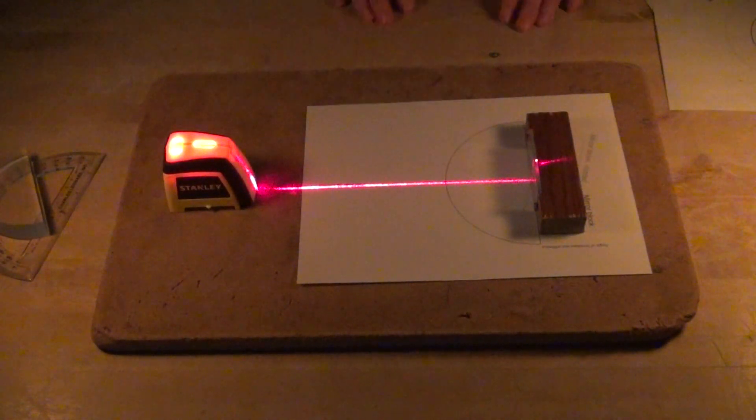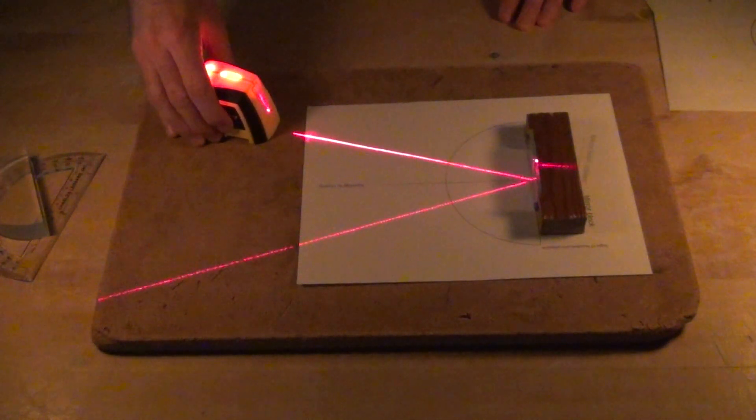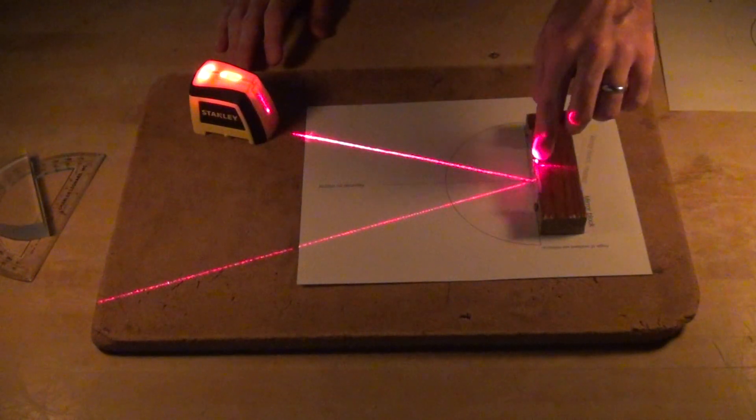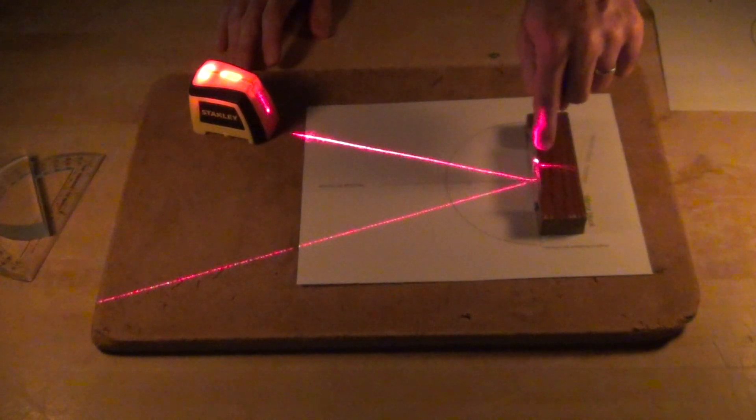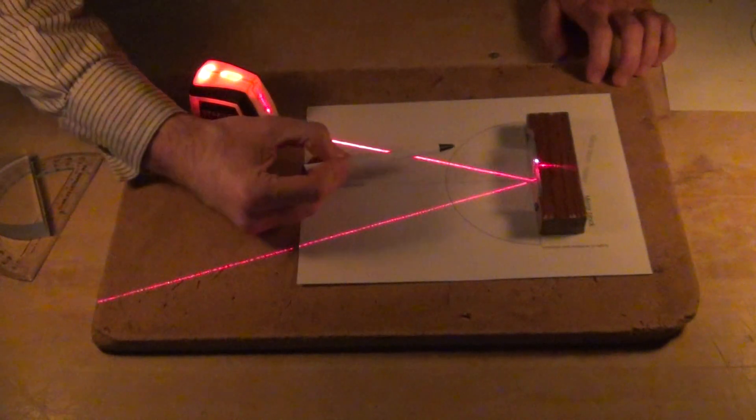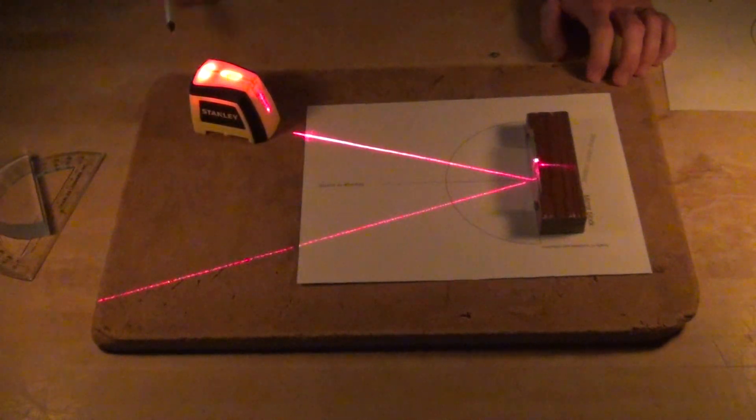Once the mirror is correctly aligned, you can bring the laser off at an angle, aiming at that point right where the normal intersects the face of the mirror. And then mark that point and that point as a pair of points.